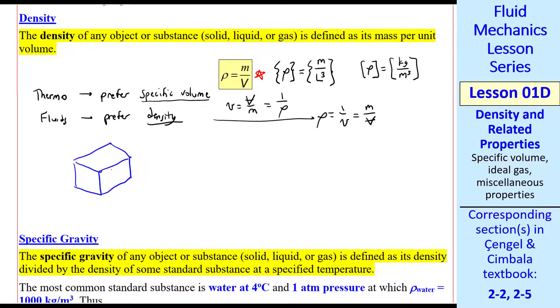Consider some volume of fluid, volume V, mass M. We can calculate the density as M over V. Now imagine shrinking this volume to a very small volume. We would have a much smaller volume and a much smaller mass, but we can still define the density as M over V. Now imagine shrinking this all to a point, or a fluid particle.